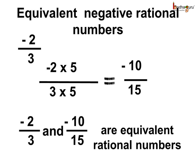Do negative rational numbers have an equivalent rational number? Yes, obviously. Here, minus 2 by 3 is a negative rational number. If we multiply both the numerator and the denominator by 5, the value remains unchanged. We get minus 2 multiplied by 5 which is equal to minus 10, and 3 multiplied by 5 which is equal to 15, so we get minus 10 by 15. Thus, minus 2 by 3 and minus 10 by 15 are equivalent rational numbers. We can also divide both the numerator and the denominator of minus 10 by 15 by 5 to get minus 2 by 3.